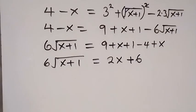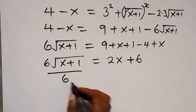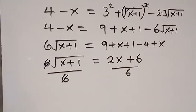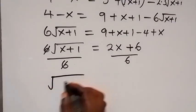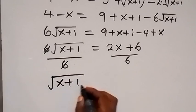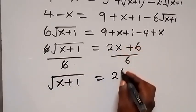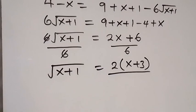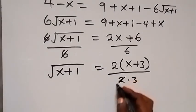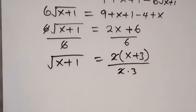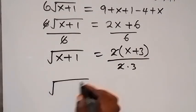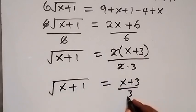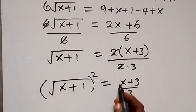In the next step, let's divide both sides by 6. The 6 cancels on the left, leaving root(x plus 1). On the right, we factor out 2 to get 2(x plus 3) over 6, which is 2 times 3, and the 2 cancels. So we have root(x plus 1) equals (x plus 3) over 3.